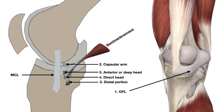The oblique popliteal ligament, also discussed in the semimembranosus video, is an extension of the capsular arm of the semimembranosus tendon. Because it runs obliquely along the popliteal region, it is called the oblique popliteal ligament. It travels toward the lateral femoral condyle and inserts over the capsule and the fabella, which is an accessory bone.